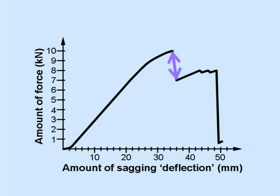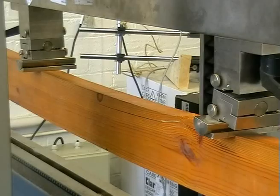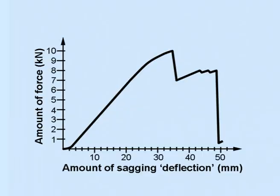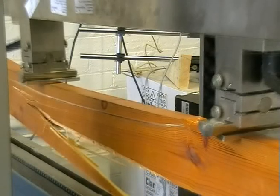Here is where the beam split and the load reduced rapidly. The beam was able to take some more load, shown here, before it finally split and failed completely.